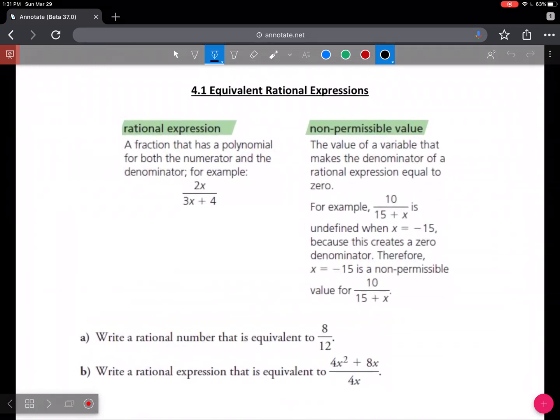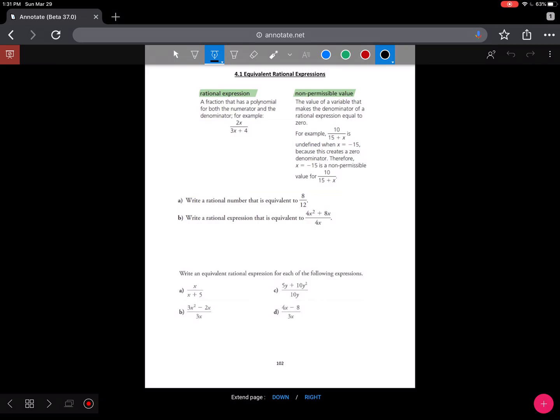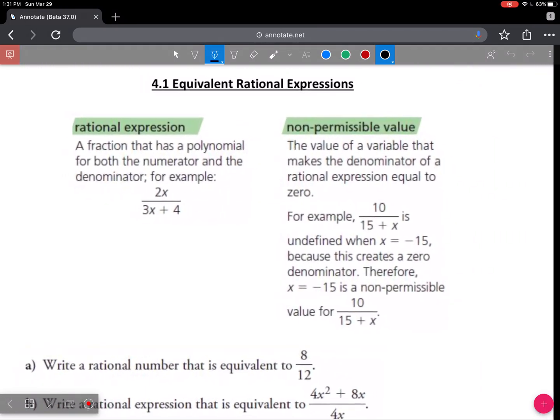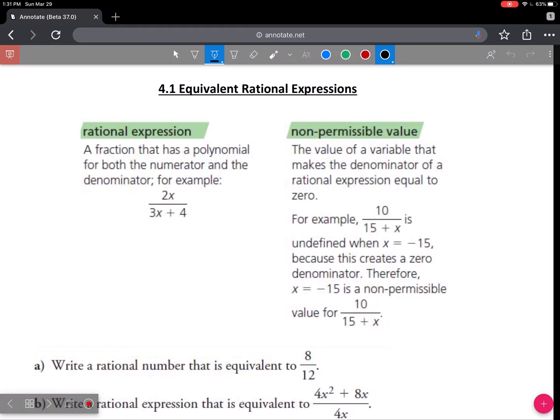We start with the definition of a rational expression here on page 102. If we think back to Math 10, a rational was just a fraction, two integers stacked on top of each other. Now, a rational expression is a fraction that involves polynomials. We have the numerator and the denominator, and those are both going to be polynomials. And if it's just a number, remember that a number is also a polynomial, it's just a constant.